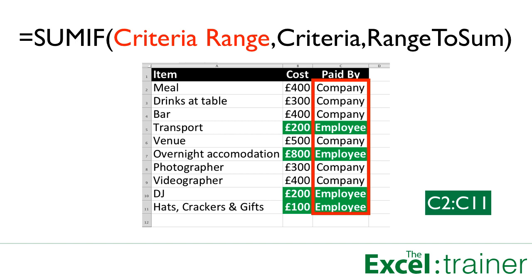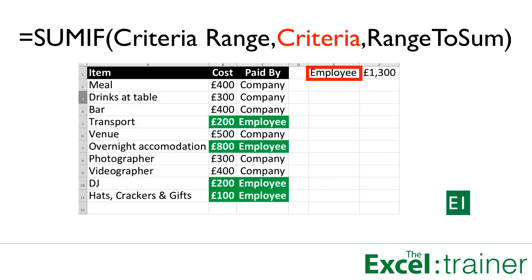The second argument is the criteria itself, which can be a number, a word, a date, or more usually a cell reference. So it could be the word 'employee', but in this case, because the word 'employee' is in cell E1, it actually makes more sense to use the cell reference.